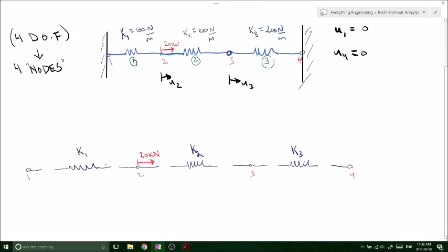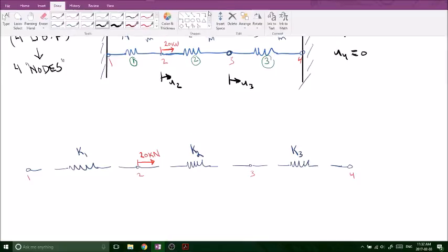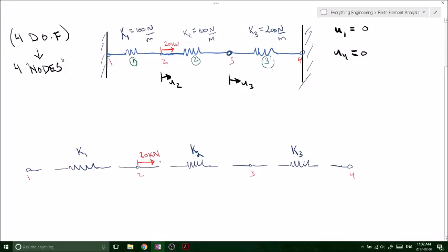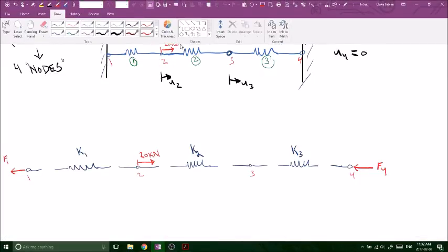If we look down here, we have our spring system broken up. Let's start labeling some stuff. So we got a 20 kilonewton force, and if we go to node number four we're gonna have our reaction force F4, and also F1 reaction force.